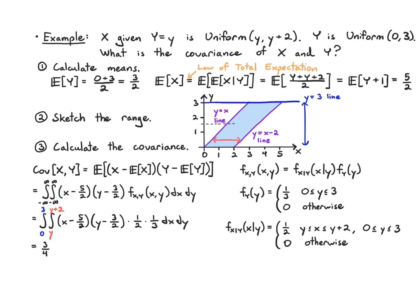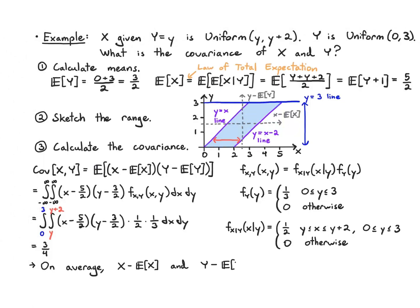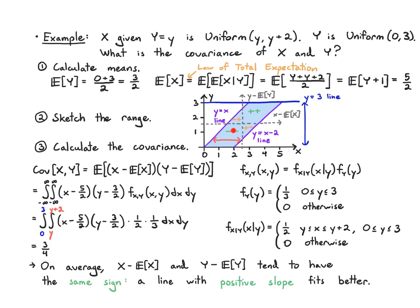So the covariance is 3/4. We draw a new shifted axis centered at x equals 5/2 and y equals 3/2, which is the coordinate system for x minus its mean and y minus its mean. We notice that on average they tend to have the same sign — spending more time in the plus-plus and minus-minus regions (green), meaning a line with positive slope crossing through this origin does a better job of fitting the distribution.